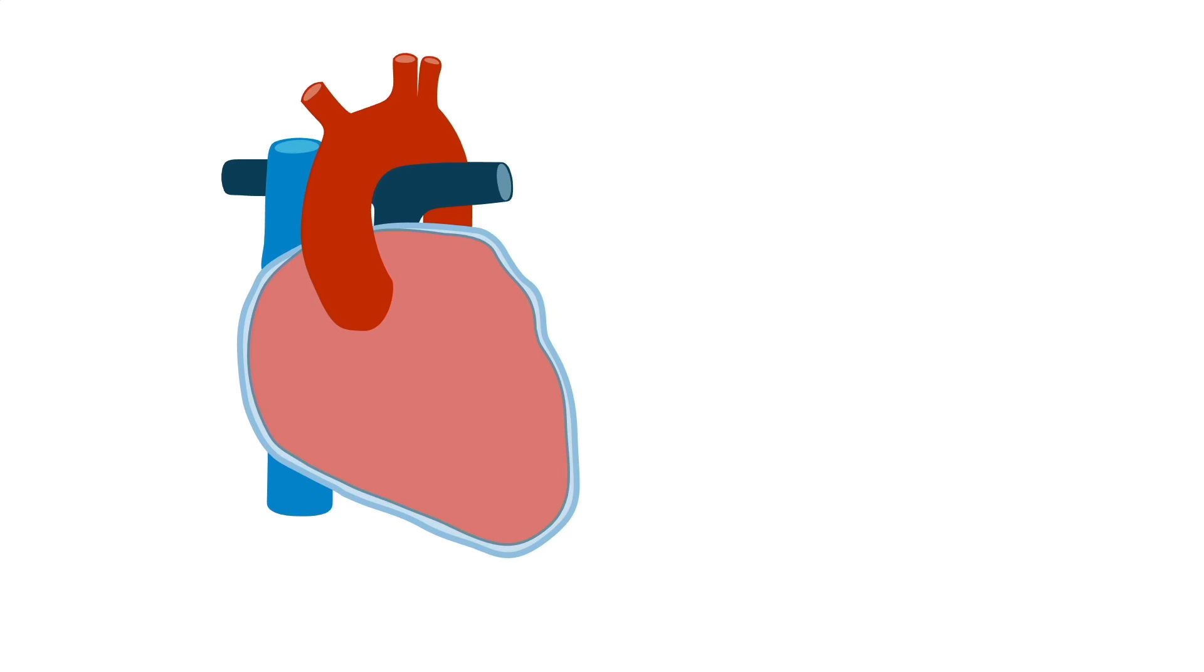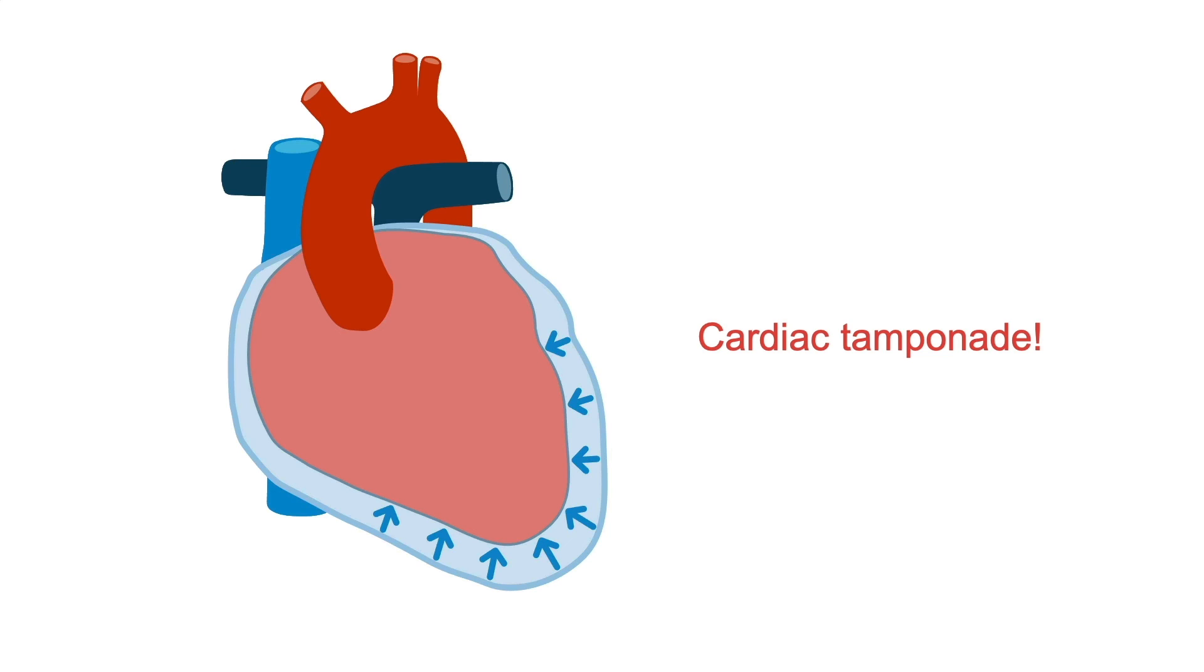But a small amount of fluid accumulating rapidly, like in the case of chest trauma, causing rapid arterial bleeding into the pericardial space, will cause tamponade. Sometimes 50 milliliters is all it takes. Join me in the next lesson to learn the consequences of increased intrapericardial pressure.